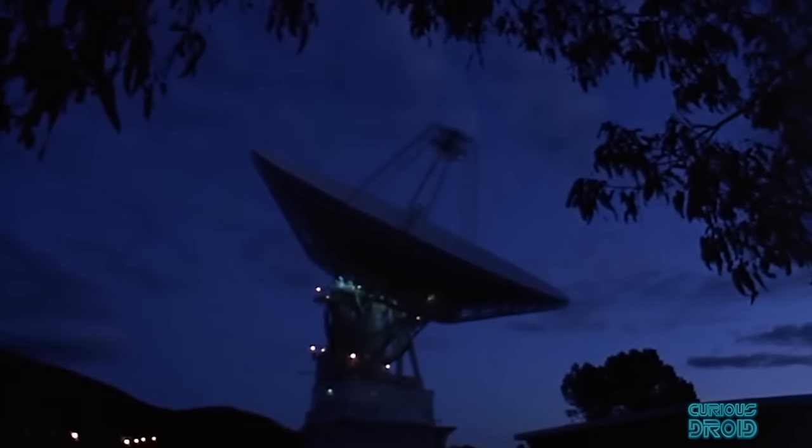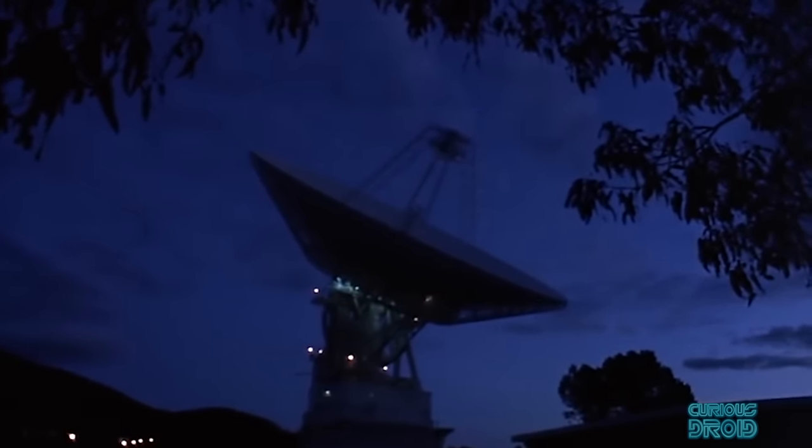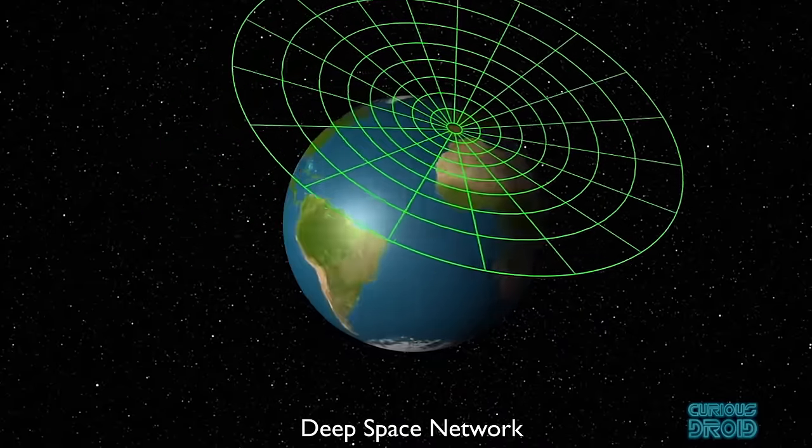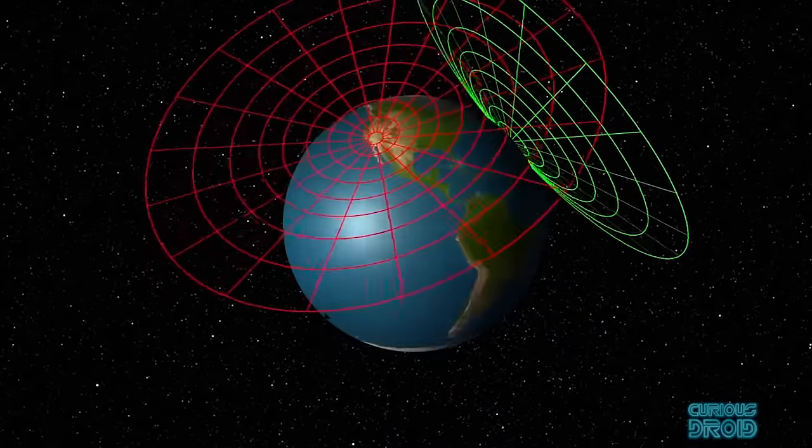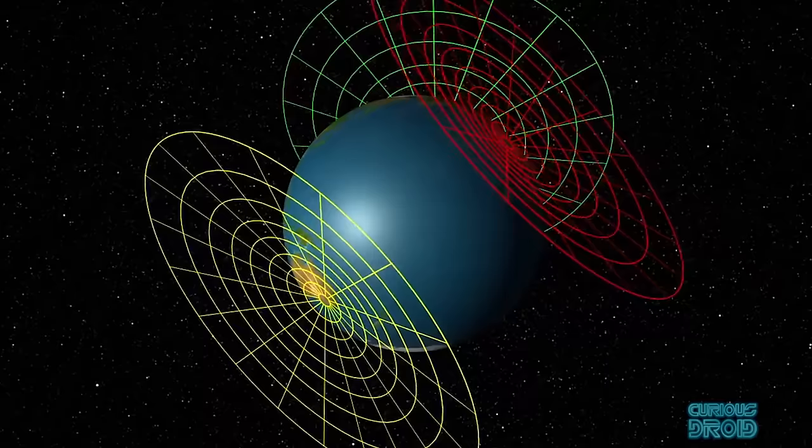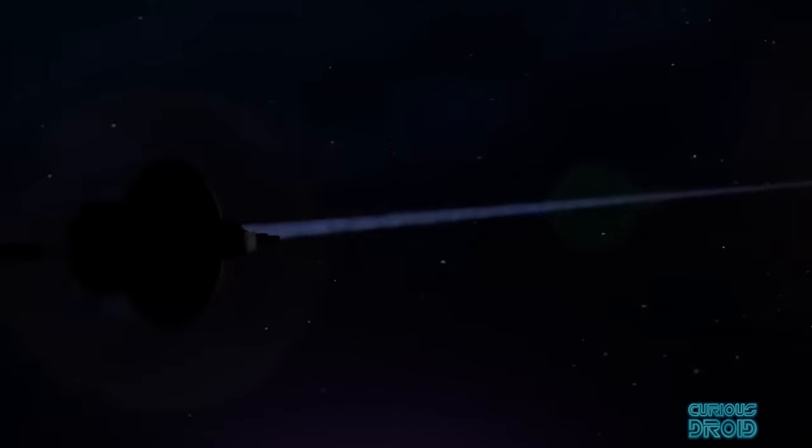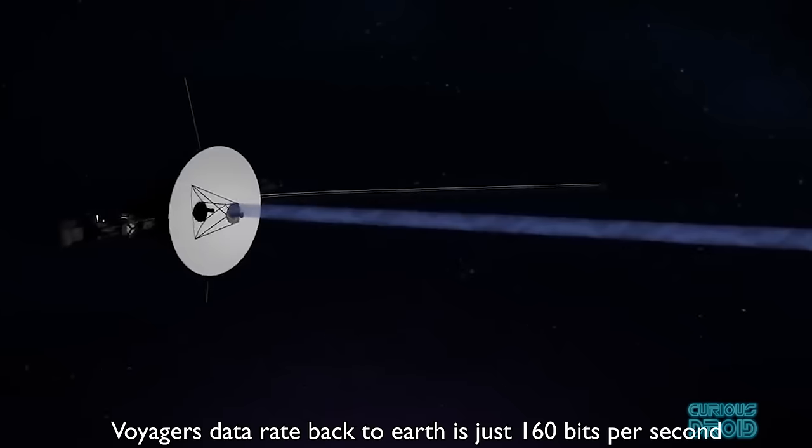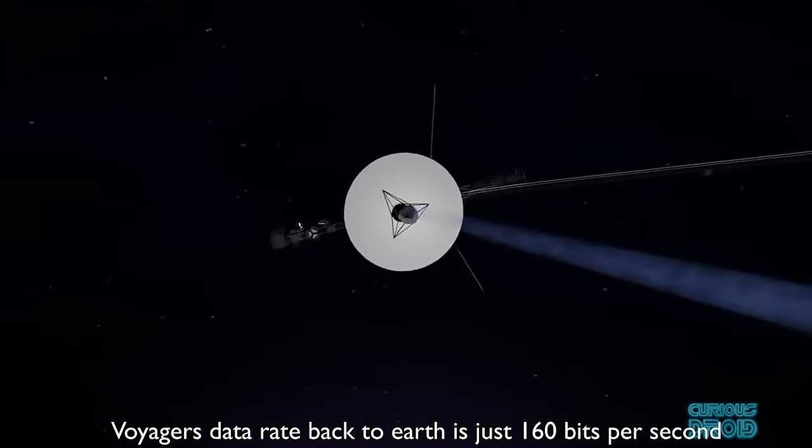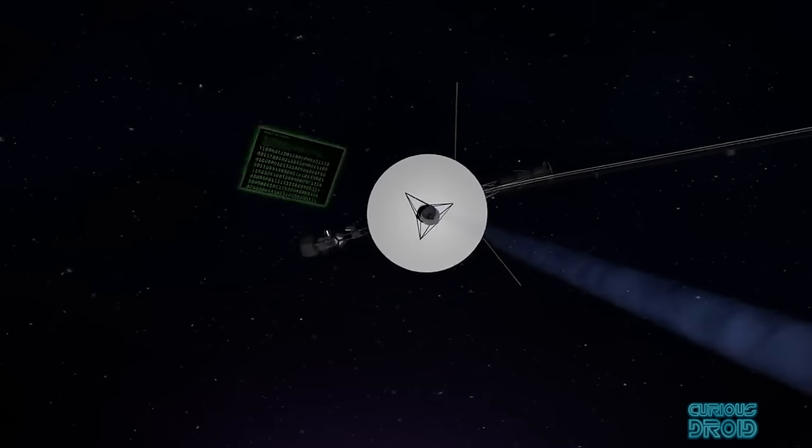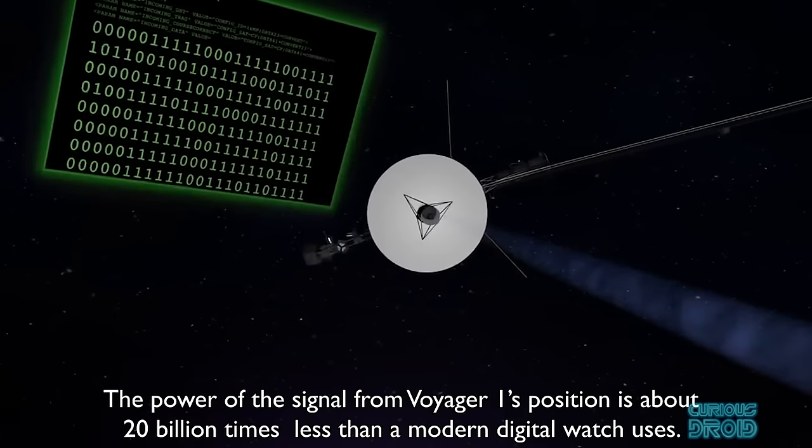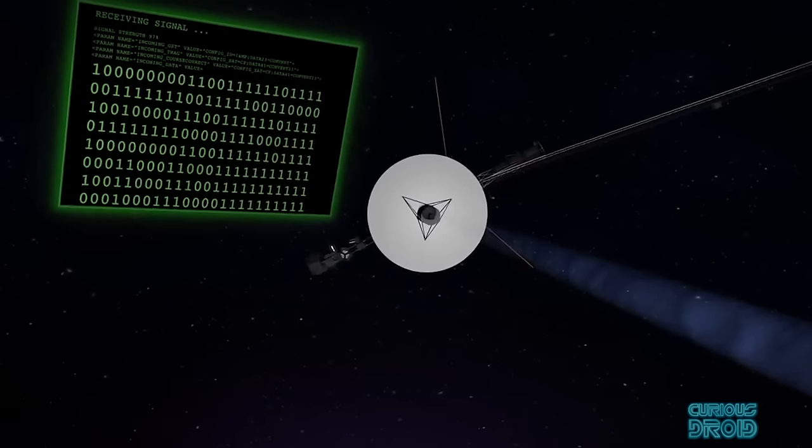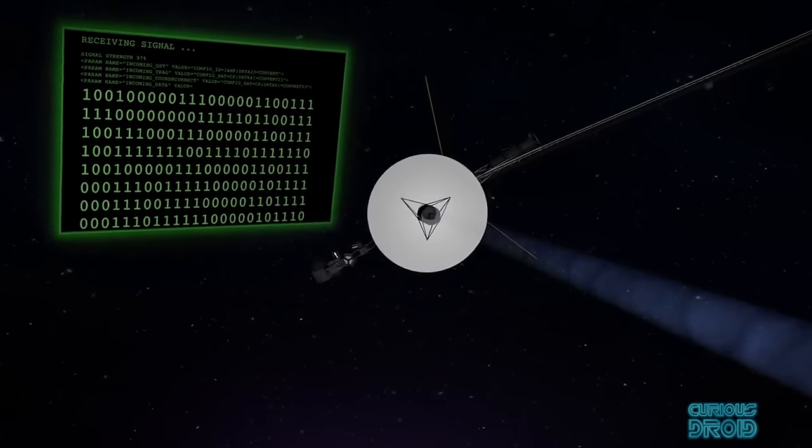To communicate and work out the distance and speed of the craft, NASA uses the Deep Space Network. This is a network of radio telescopes spread around the world so that at least one will be in contact with the spacecraft at all times. By sending a radio signal to the craft and having it return the signal and using the Doppler effect and a highly accurate atomic clock, the slight difference between the two signals can be used to calculate its distance from Earth to within 3 meters and its speed to within 180 millimeters per hour.